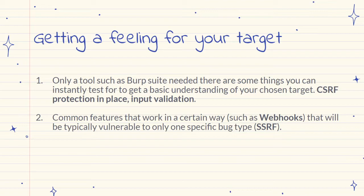We're going to be getting a basic understanding of your target — cross-site request forgery protection in place, input validation, what's been filtered, etc. But also keep an eye out for common features that work in a certain way. I've used webhooks as an example because sometimes you'll find websites have a developer portal where you can test things if you're building an application. That feature is designed to send a server-side request, so as an attacker and bug hunter, you know what you should be looking for and what it's potentially vulnerable to.